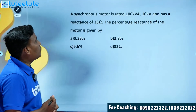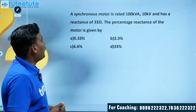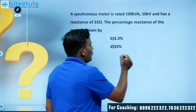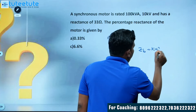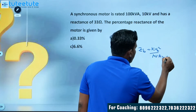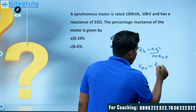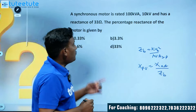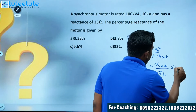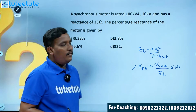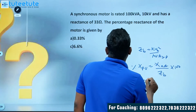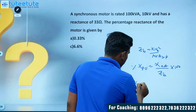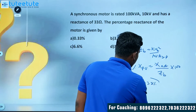The first question: a synchronous motor is rated at 100 kVA and 10 kV, and the reactance is 33 ohms. Find the percentage reactance in per-unit values. We know the base impedance Zb = kVb² / MVA (three-phase). The per-unit reactance X_pu = X_actual / Z_base, and percentage = per-unit × 100. Substituting the given values, we get X% = 3.3%.